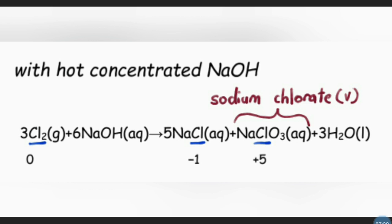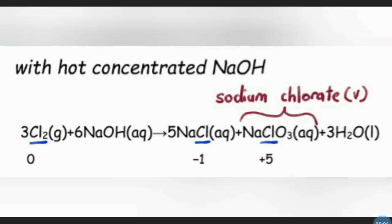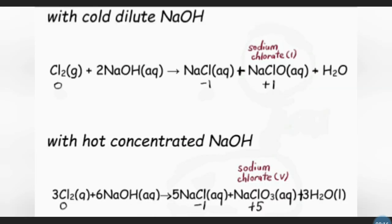Now let's look at the reaction between chlorine and hot concentrated sodium hydroxide solution. The product this time includes sodium chlorate (NaClO₃). Chlorine changes oxidation state from zero to negative one in sodium chloride and positive five in sodium chlorate. Chlorine is again both oxidized and reduced — another example of a disproportionation reaction.